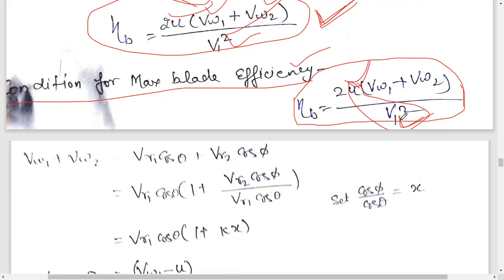We need to convert everything in terms of V1, since Vw1 and Vw2 are components of V1. We cannot treat them as independent variables. So first we must express Vw1 and Vw2 in terms of U and V1.